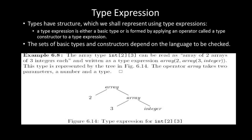Type expressions either have a basic type or are formed by applying an operator called the type constructor, or type expressions may combine two type expressions. The set of basic types and constructors depends on the language to be checked — according to that, we apply those basic types and functions. For example,